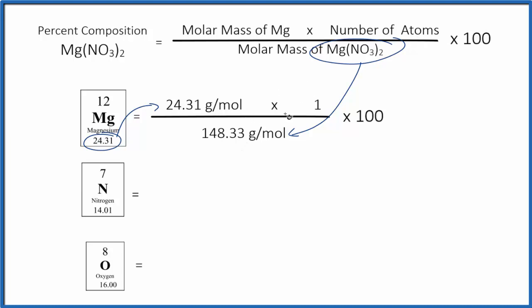So we multiply, divide, and then we multiply by 100 to get a percent. You'll note grams per mole, that cancels out, so we end up with 16.39% as the percent mass of magnesium in magnesium nitrate.